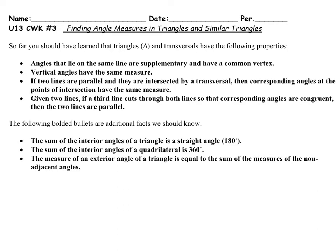That last one may have been a little confusing. What that means is if you've got a triangle like this, and then we've got a line that comes out of it, then this angle is the same as these two added together. Because this angle plus the two purple ones is 180 degrees, and the green angle plus the red one is also 180 degrees.